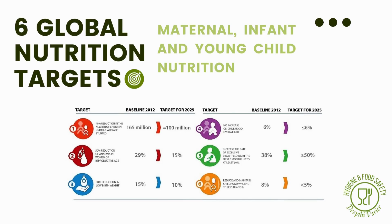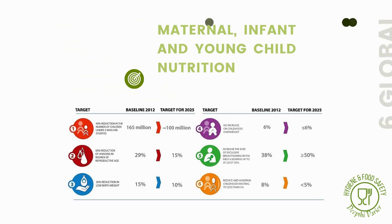In 2012, the World Health Organization identified six global nutrition targets to be achieved by the year 2025. These targets include: a 50% reduction of anemia among women of reproductive age, a 30% reduction in low birth weight, increasing the rate of exclusive breastfeeding in the first six months to at least 50%, a 40% reduction of stunting in children, a 5% reduction and maintenance of under-five wasting, no increase in under-five overweight, and halting the increase in obesity and diabetes prevalence. These six global nutrition targets relate to maternal, infant, and young child nutrition.